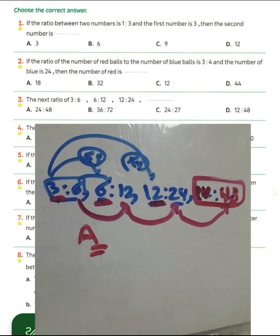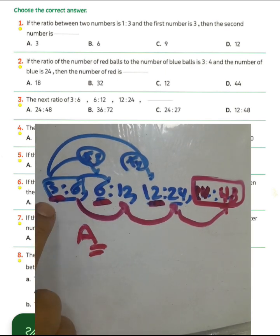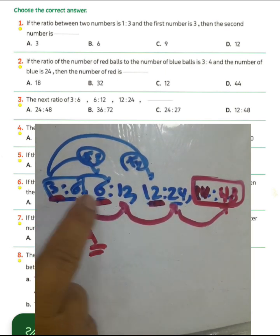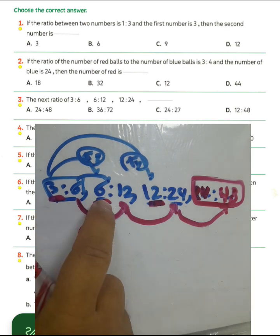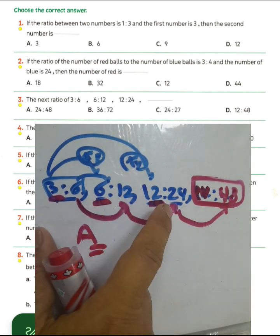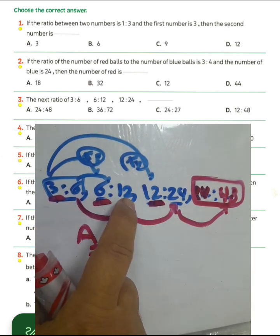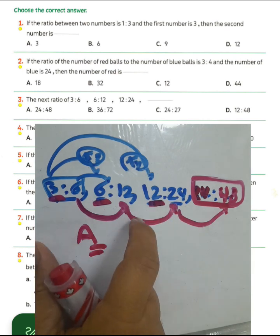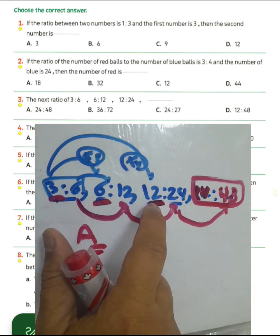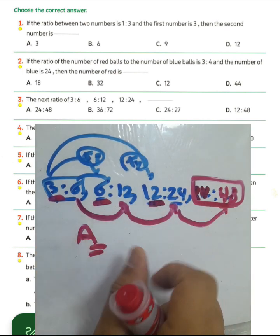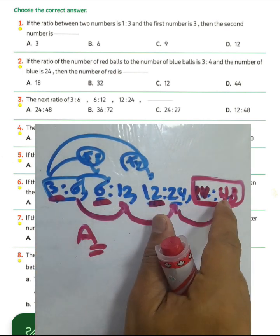Again to recap: two times three equals six, two times six equals 12, six times two equals 12, two times twelve equals 24, two times 24 equals 48. So the sequence is confirmed as 24 to 48.